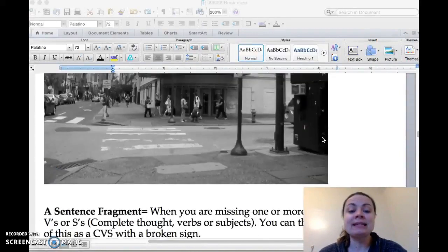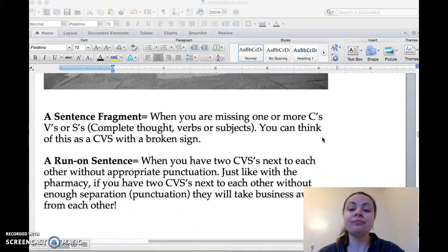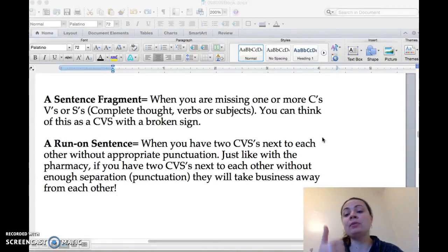In a sentence you have a complete thought, that's the C, a verb, that's the V, and a subject, that's the S. What makes up a complete sentence is a complete thought, a verb, and a subject. Those are the parts of the sentence. There's three parts.